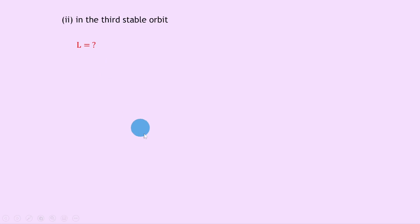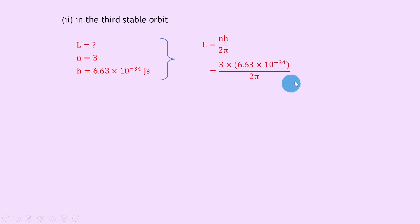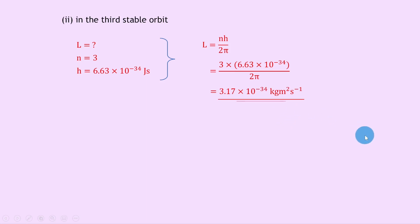Part a part two says to calculate the angular momentum in the third stable orbit. The only thing that changes is n, which is now 3. Using L equals nh over 2 pi and substituting n equals 3 with h equals 6.63 times 10 to the minus 34 joule seconds gives an answer of 3.17 times 10 to the minus 34 kilogram meter squared per second.